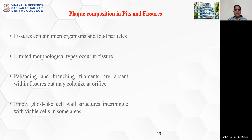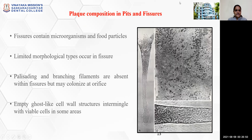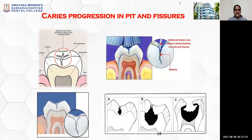The plaque composition of pit and fissures: the fissures contain micro-organisms and food particles. Limited morphological types occur in fissures. Palisading and branching filaments are absent within fissures but may colonize at the orifice. Empty ghost-like cell wall structures intermingle with viable cells in some areas.